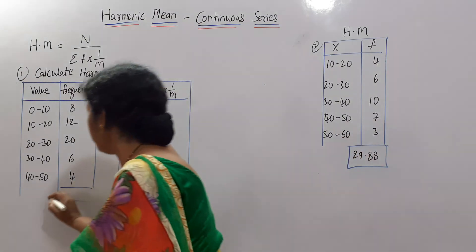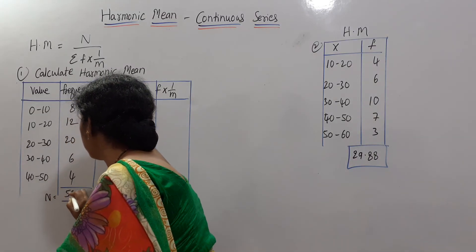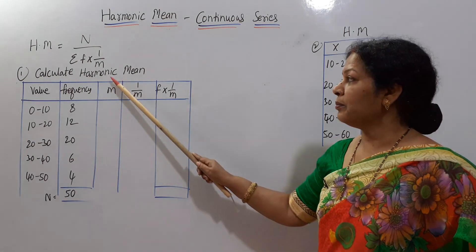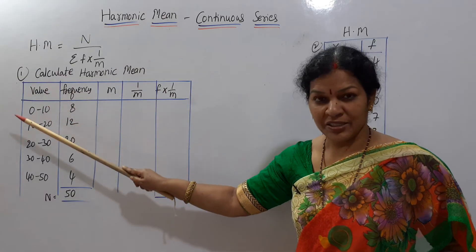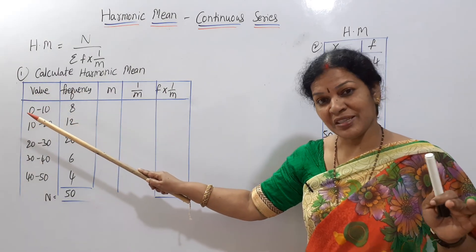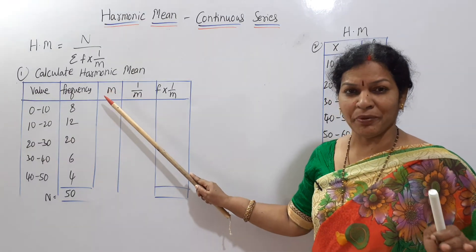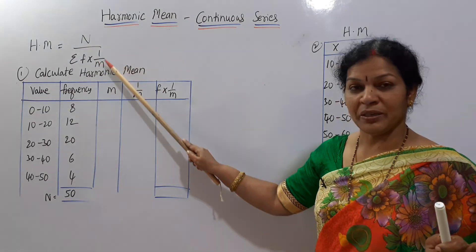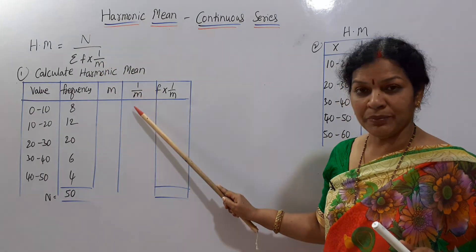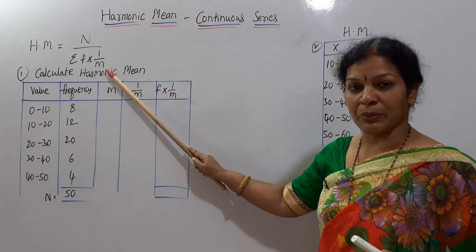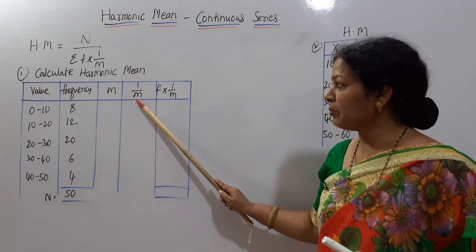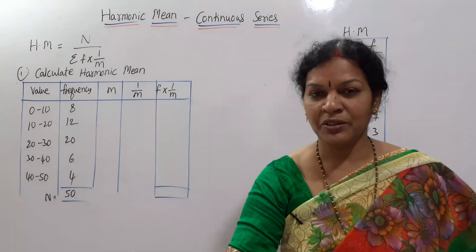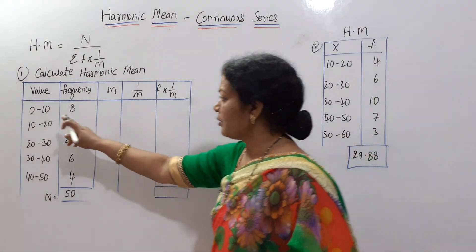Next, frequency into 1 by M. First we need to calculate the M. M means mid value. X we cannot calculate directly, which represents the X is M, mid value or midpoint. So that we'll calculate. Then after that, 1 by M will be required, so 1 by M another column. Then after that, frequency into 1 by M, this multiplication here we are going to write. Simple calculations only, right?